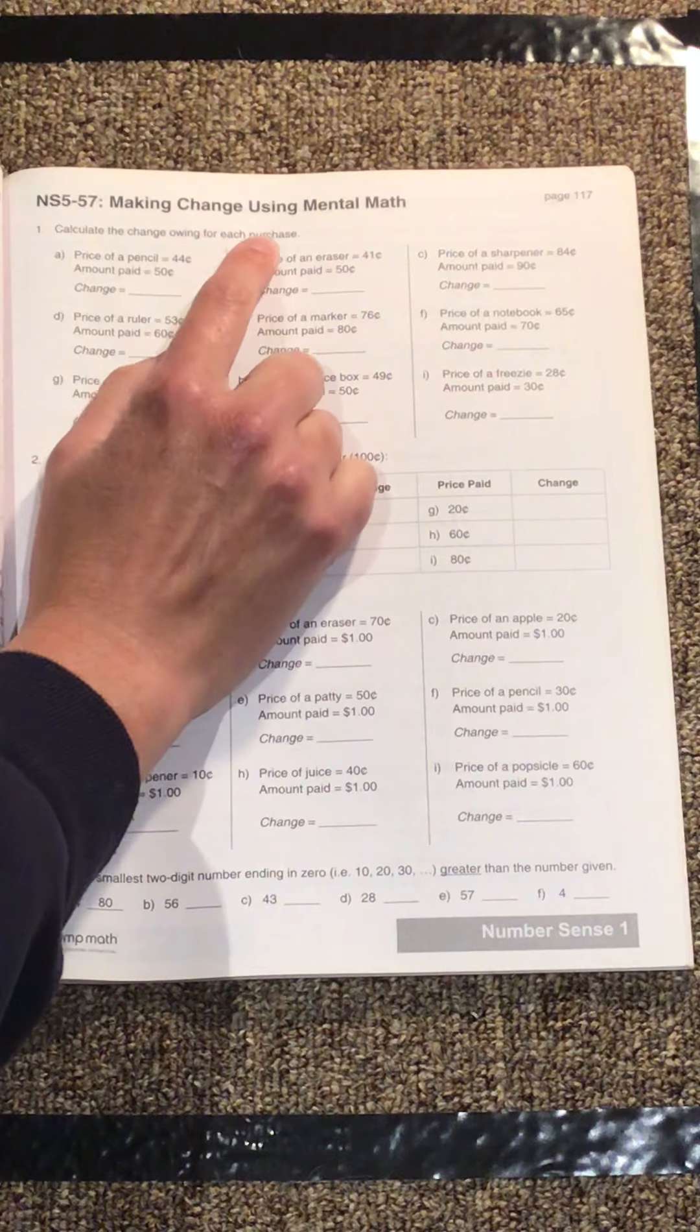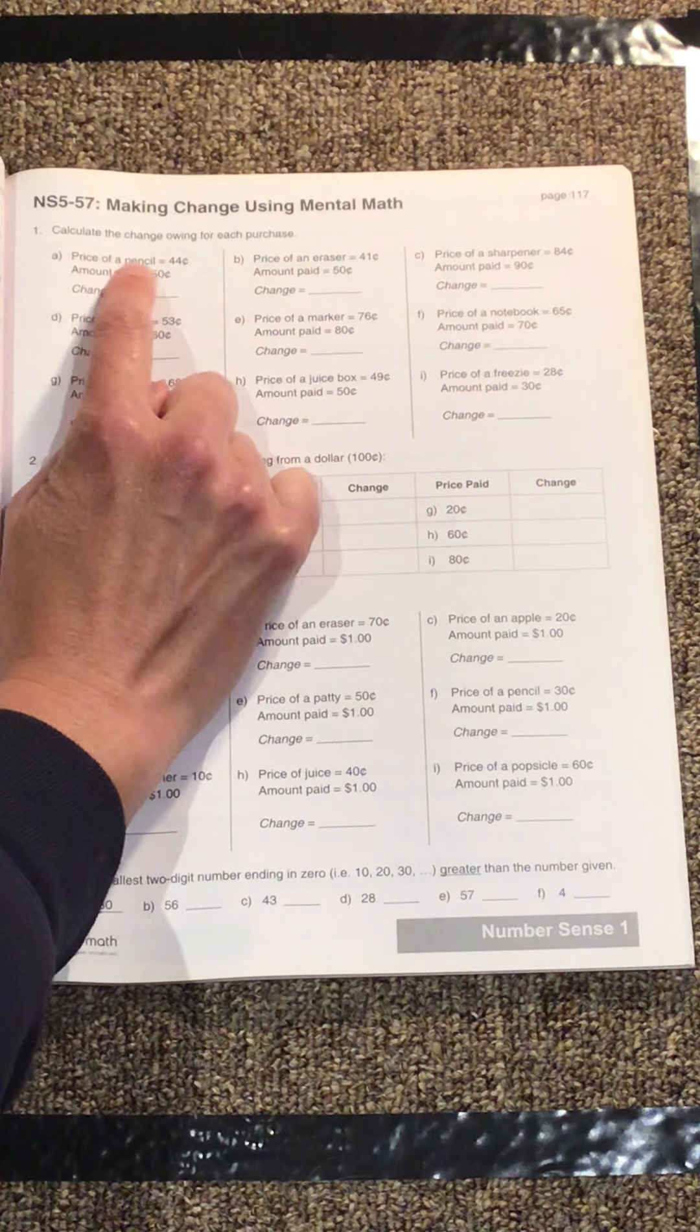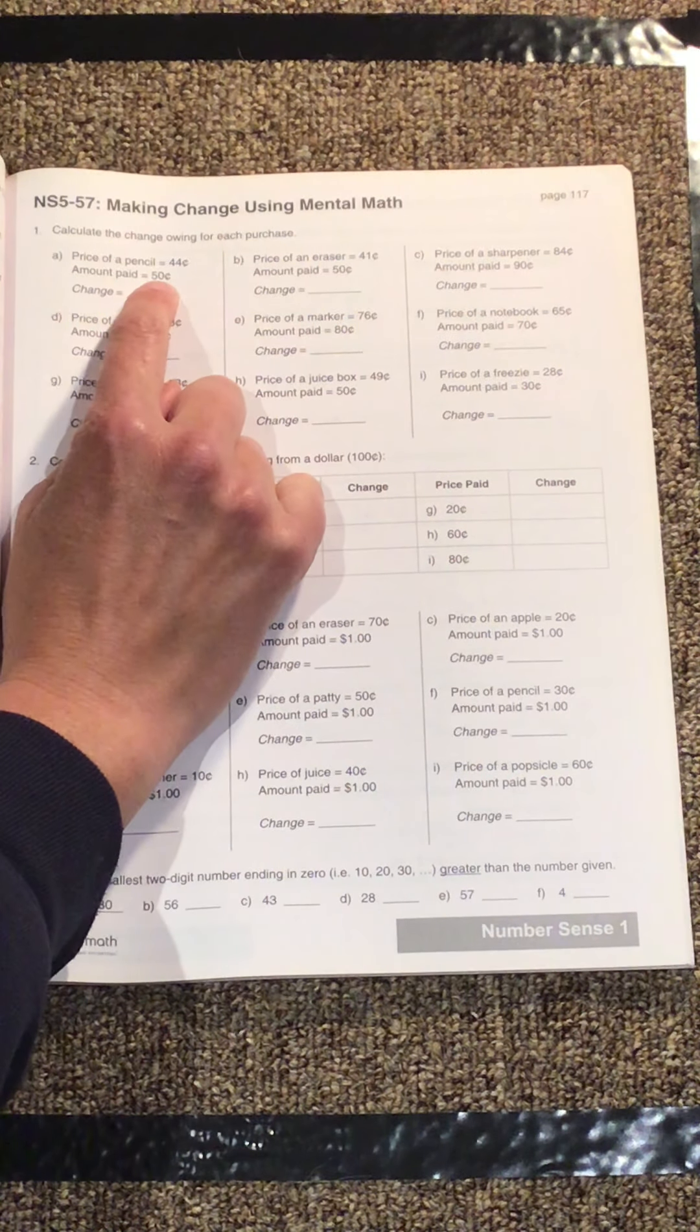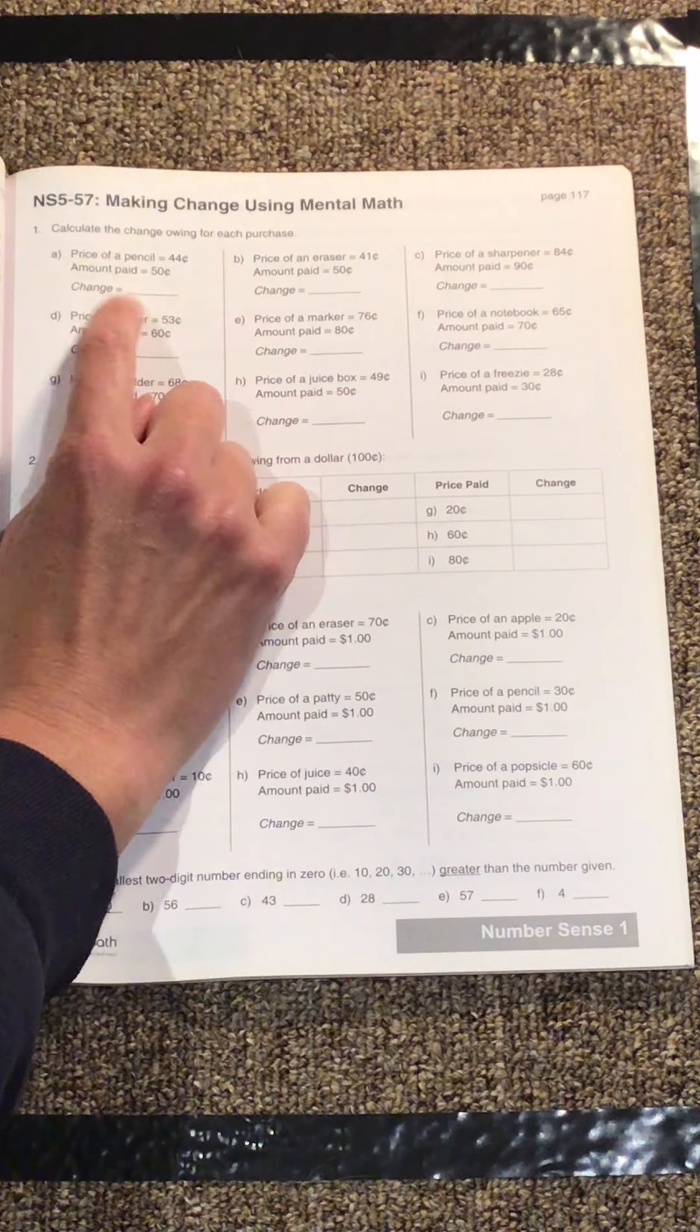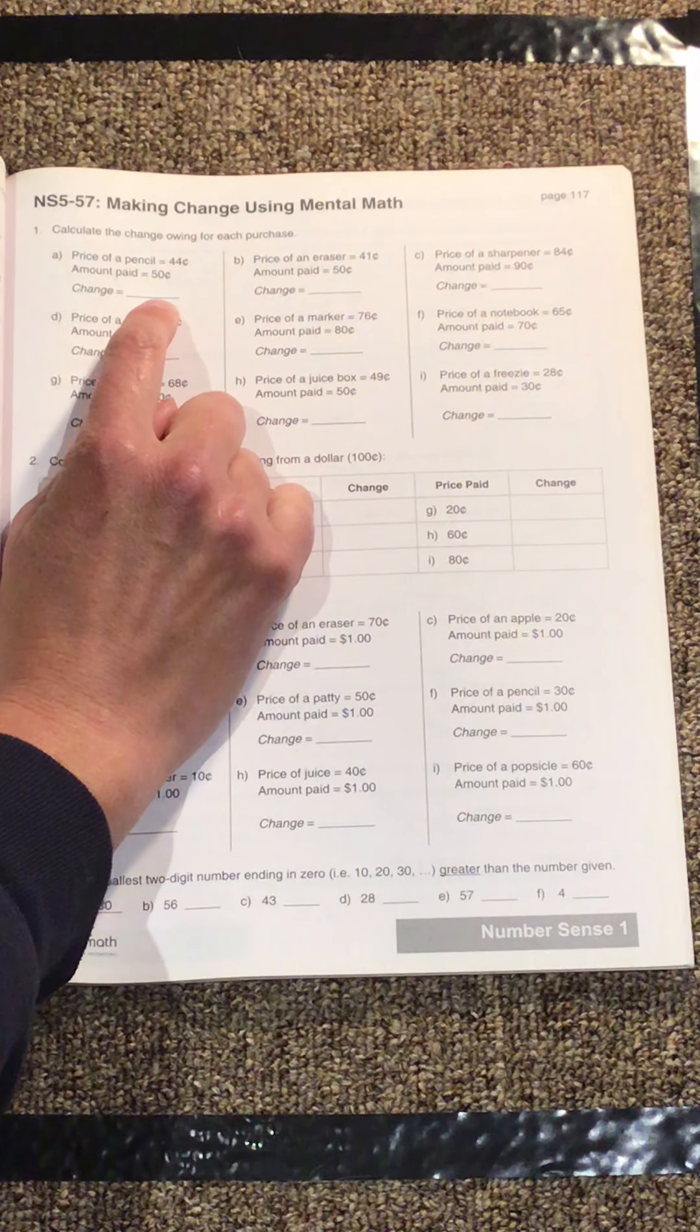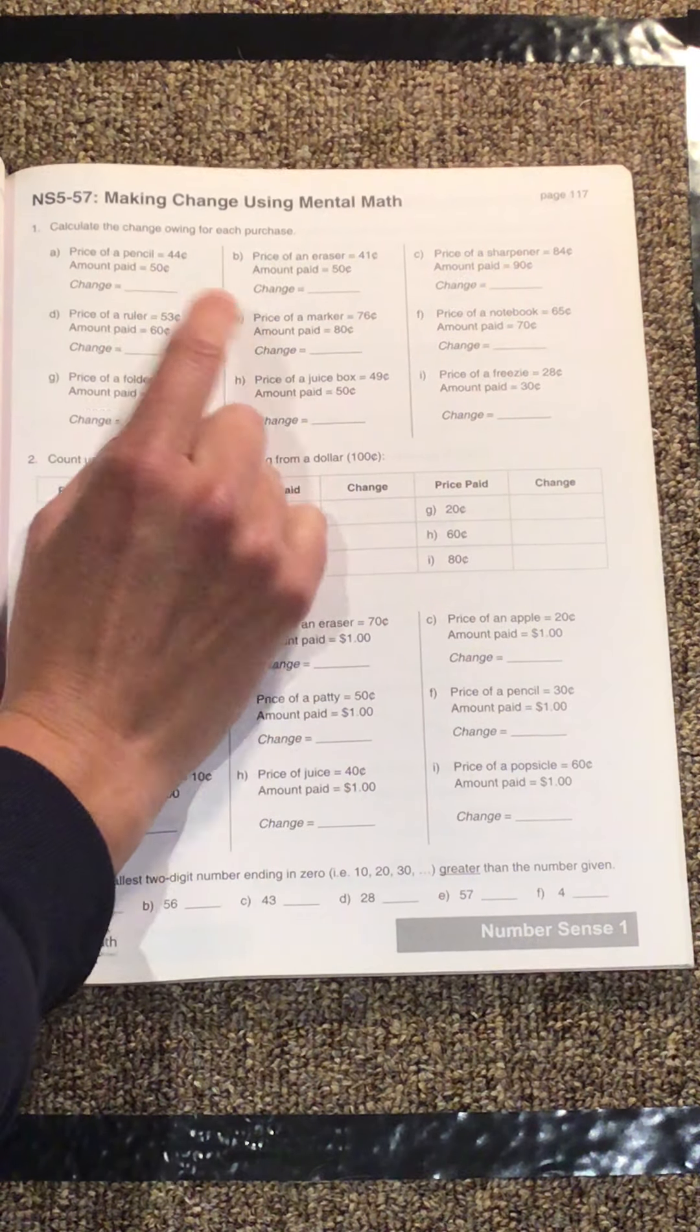Calculate the change owing for each purchase. So they tell you the price on the first line and how much was paid on the second line, and then you write here how much change you need to give them.